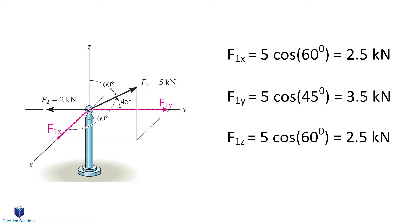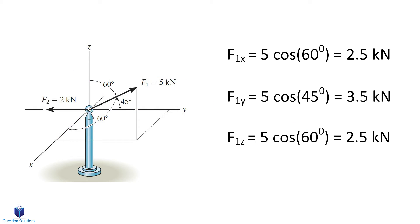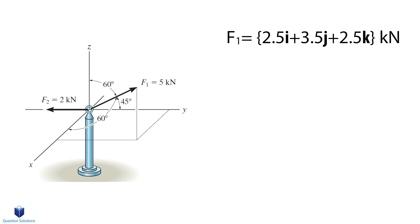Finally, we can write the z component of force F1. That's equal to 5 kN multiplied by cos 60 degrees. The force is multiplied by the angle between the positive z-axis and the force itself. When a force is given with the coordinate direction angles, you multiply the force by the cos of the angle between the positive axes of the component you are trying to find. We can now write force F1 in Cartesian vector notation, which is 2.5i plus 3.5j plus 2.5k, each value corresponding to each of the components we found.